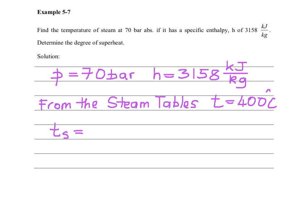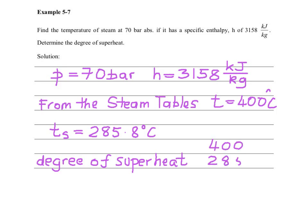Degree of superheat is simply 400, take away 285.8 degrees centigrade. This gives us 114.2 degrees centigrade.